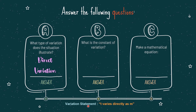For question B: what is the constant of variation? Since the situation illustrates a direct variation, the formula for finding the constant of variation is K equals T divided by M — where T is the number of hours and M is the number of modules. By substitution, K is equal to 12 divided by 4. Therefore, K is equal to 3. The constant of variation is equal to 3.